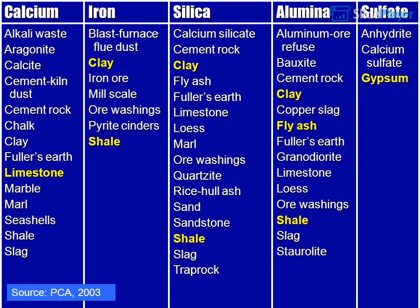Additional raw material sources include pyrite cinders, calcium silicate, fly ash, quartzite, rice hull ash, sand, tripolite, aluminum ore refuse, bauxite, copper slag, granite, anhydrite, calcium sulfate, and gypsum. Source: PCA 2003, Table 2-1, sources of raw materials used in manufacture of Portland cement.